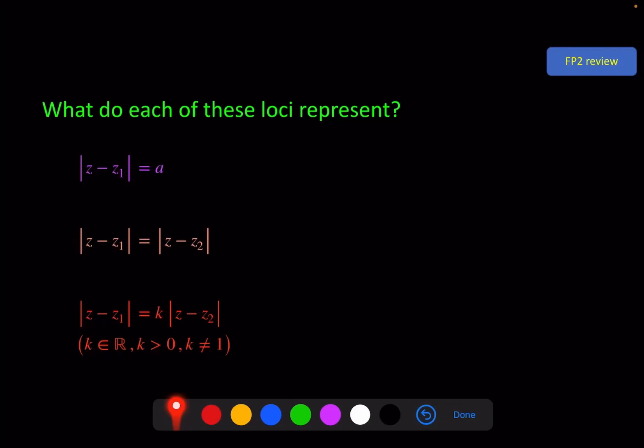Hello and welcome to the second video of the FP2 Chapter Further Argand Diagrams. On the screen, a quick starter to review what we did in the last video. What do each of these loci represent?